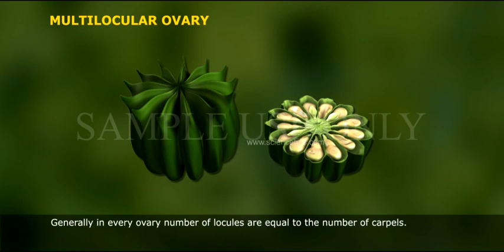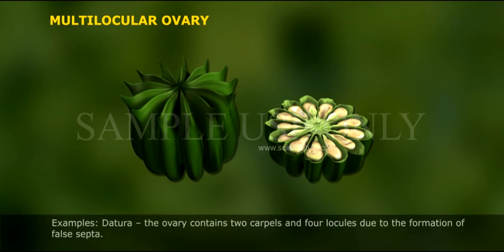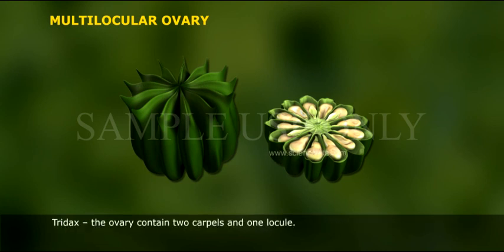Generally, in every ovary, the number of locules is equal to the number of carpels. But in some plants, the number of locules may be less or more than the number of carpels. Example: Datura — the ovary contains two carpels and four locules due to the formation of false septa. Tridax — the ovary contains two carpels and one locule.